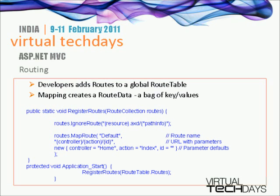Here is an example of the default route you can find in the global.asax file, and an example of how the register routes method executes the route, creating the route and mapping it.